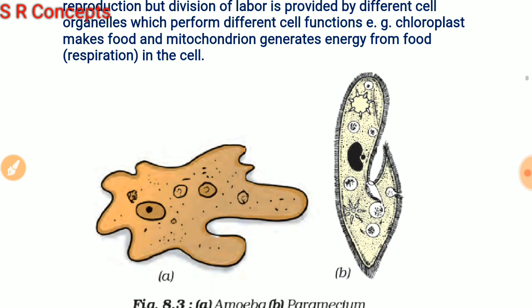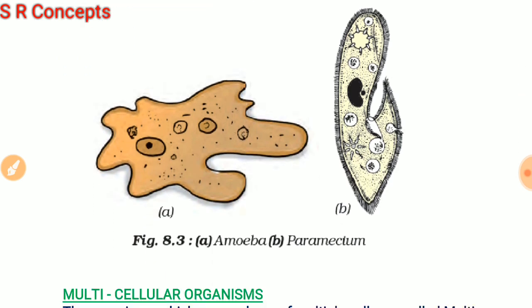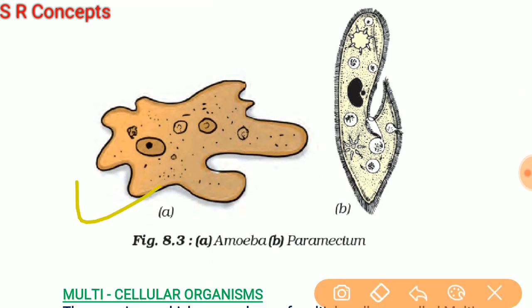Looking at images of unicellular organisms like amoeba and paramecium, you can see the different cell organelles inside them. These organelles perform different functions. This division of work among different cell organelles is known as division of labor.